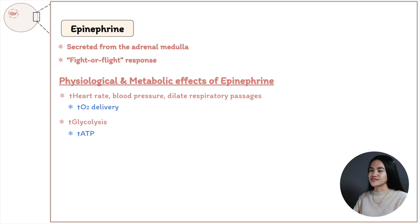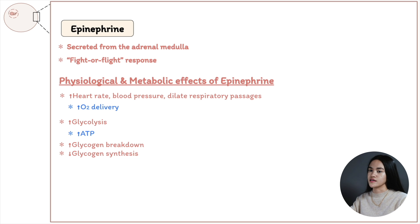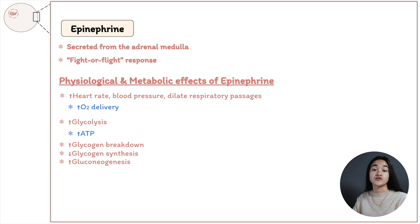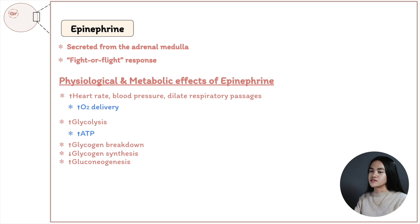Epinephrine also activates liver glycogen breakdown by activating glycogen phosphorylase and inhibits glycogen synthase, converting glycogen to blood glucose to increase energy availability. It stimulates the anaerobic degradation of glycogen in muscle by lactic acid fermentation to produce ATP. Glycogen synthesis slows down and gluconeogenesis is activated to produce more glucose.